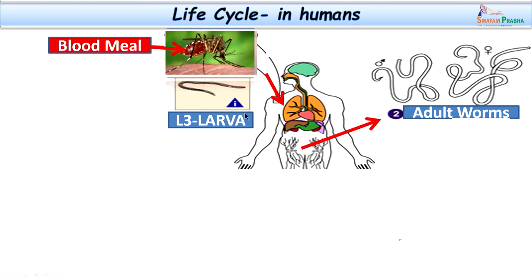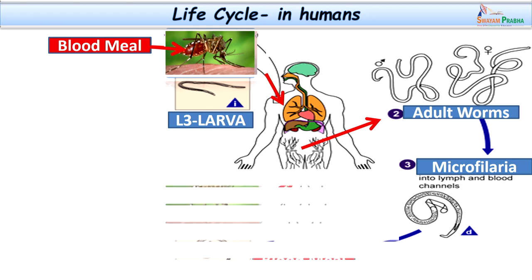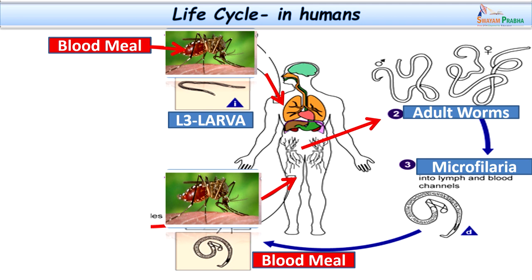The L3 larvae enter into the skin, then into the subcutaneous tissues, and further go into the lymphatics. They locate in the lymphatics, and within 3 to 12 months they start multiplying into adult parasites. The adult parasites reproduce and release microfilaria. The microfilaria enter into the efferent lymphatics, and through the thoracic duct they enter into the circulation. They may be present in large numbers in the circulation — that is the time when the blood meal is taken by the mosquito.